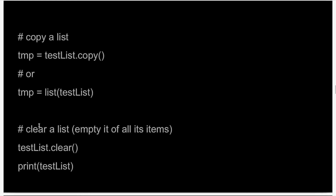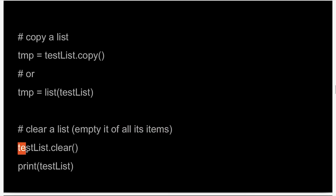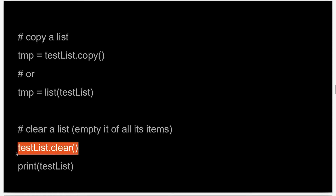Sometimes you might also want to clear a list, which means emptying the list of all its items. You can do that by writing the name of the list dot clear parenthesis. If you do this, all the items from your list will be emptied. This might help you save memory later on.